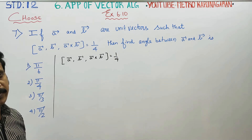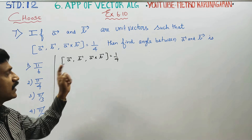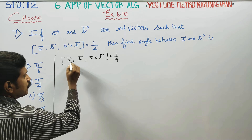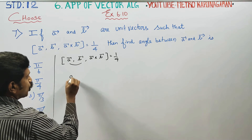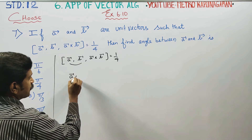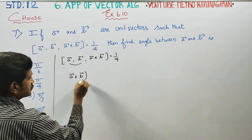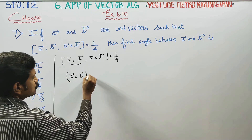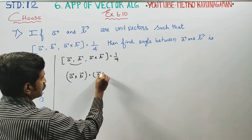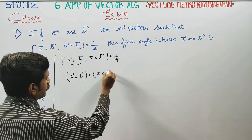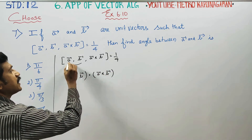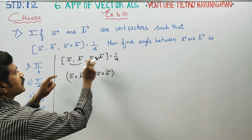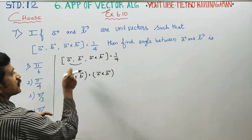Scalar triple product means dot and cross. The scalar triple product is also called the box product, written using cross and dot operations.